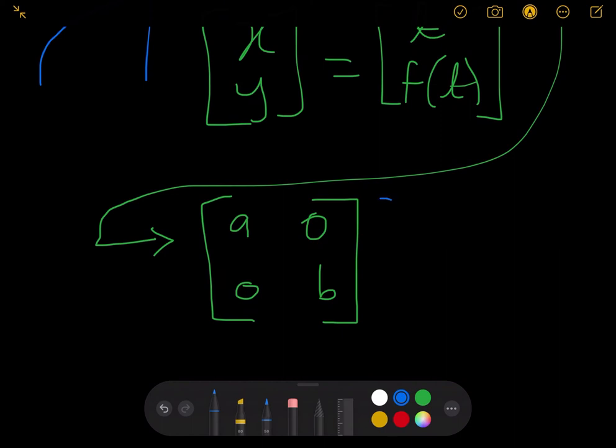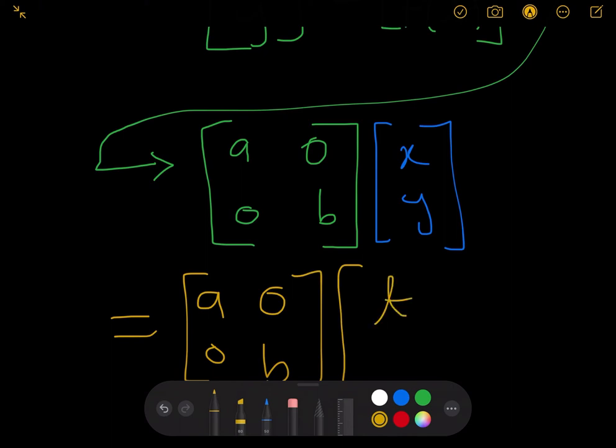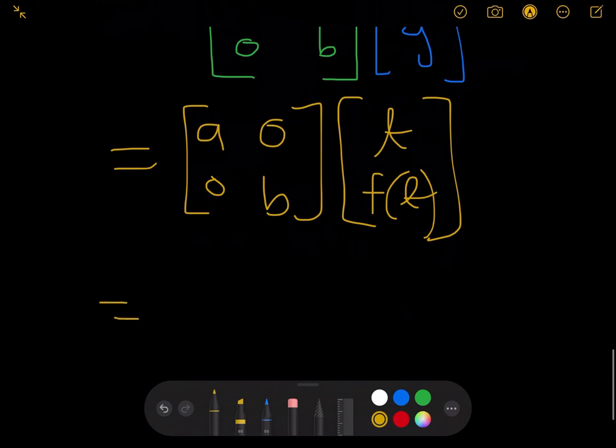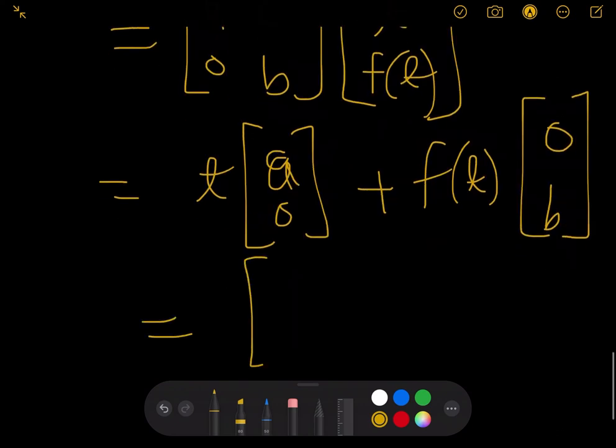So if I were to stretch horizontally by a factor of a, then my i hat would go from 1, 0 to a, 0. Likewise, j hat would go from 0, 1 to 0, b. And essentially, this right here is a linear transformation. So if I want to apply the transformation, all I have to do is multiply it to x, y. And this gives, just use a different color. This gives what? a, 0, 0, b, times t and f of t. Which is nothing but t times a, 0, plus f of t times 0, b. This is a t, b f of t. You see?